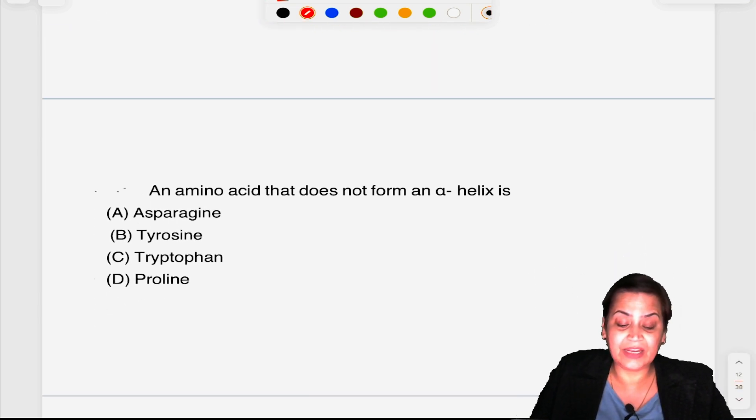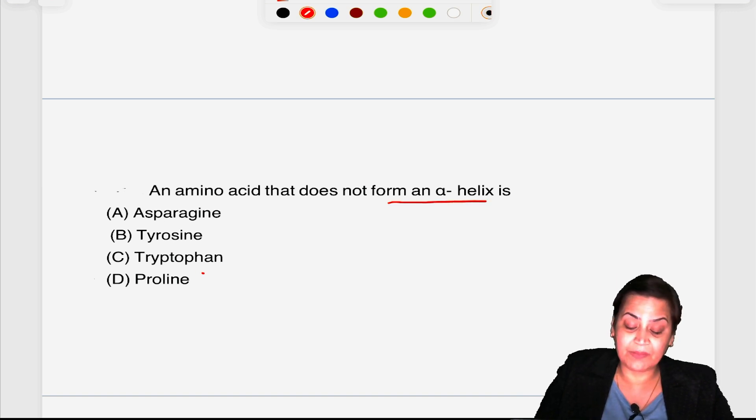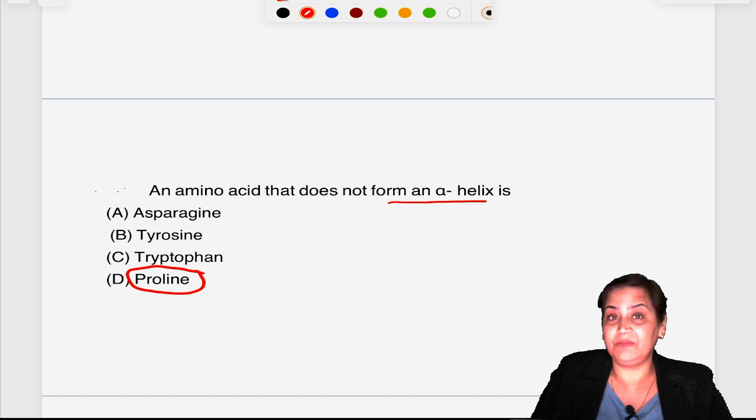An amino acid that does not form an alpha helix? Always remember this is again your FMGE question: proline. Wherever proline is present, it will always destabilize the helix. So the answer will be proline.